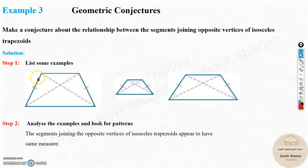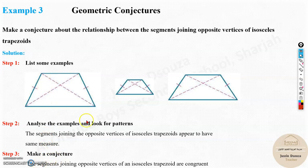The legs are obviously equal because it's isosceles. Isosceles trapezoid will have the legs equal, but this segment - the conjecture would be: the segments joining opposite vertices of isosceles trapezoid are congruent. Congruent means equal.